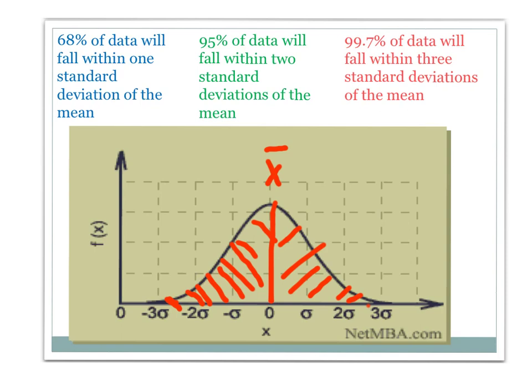So we call this rule the empirical rule. The empirical rule also has a name, which I think will make more sense to you. It's also called the 68-95-99.7 rule. So basically, the empirical rule tells you what percentage of the data is within one, two, and three standard deviations. I like to call it the 68-95-99.7 rule, because then I can't forget those numbers.